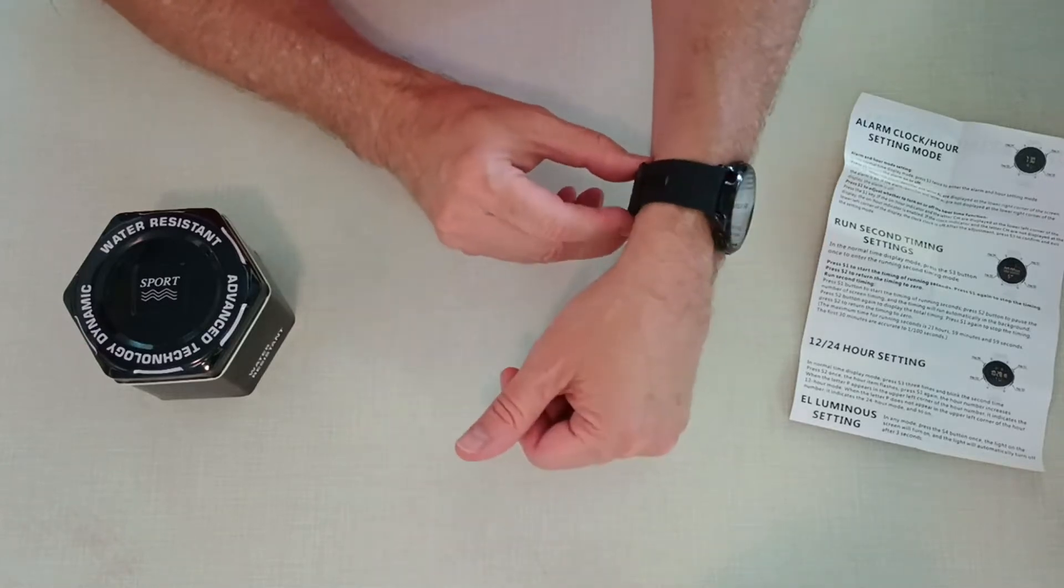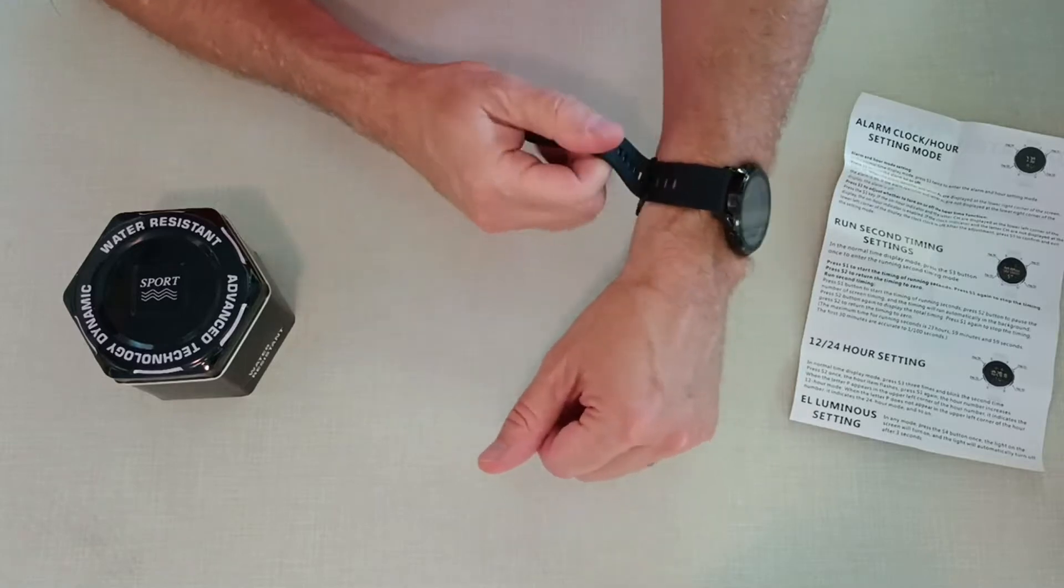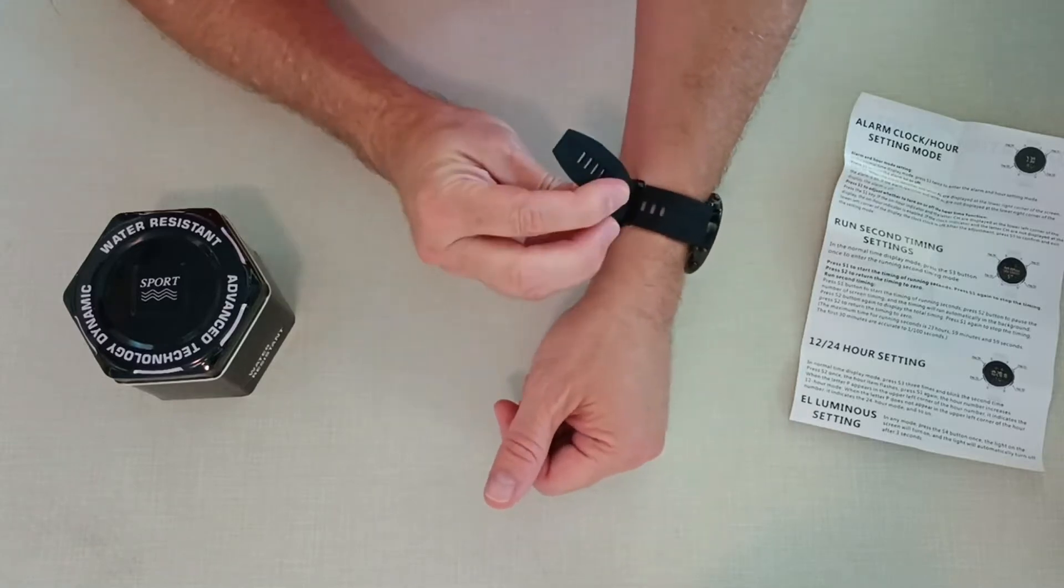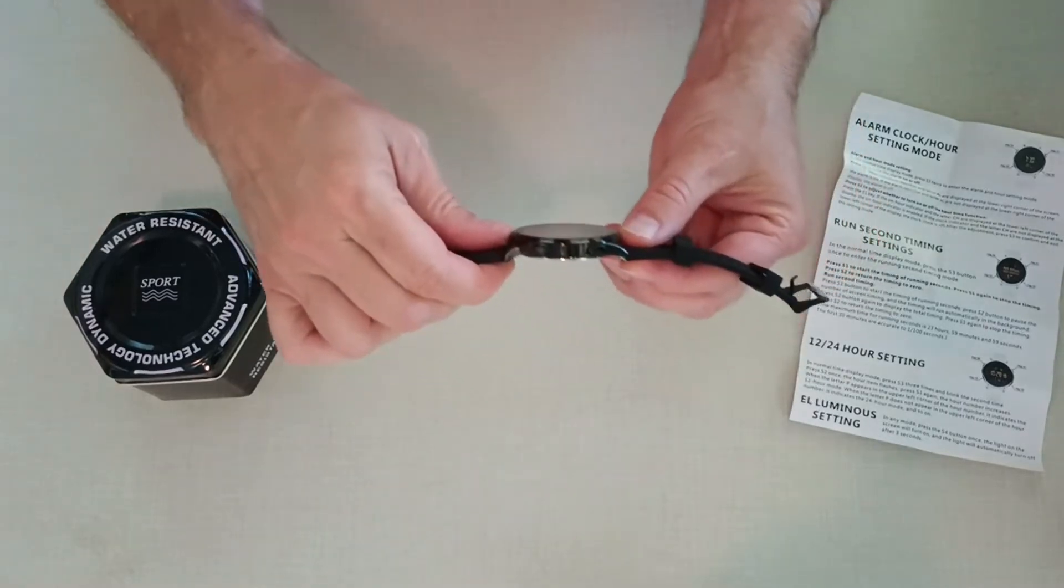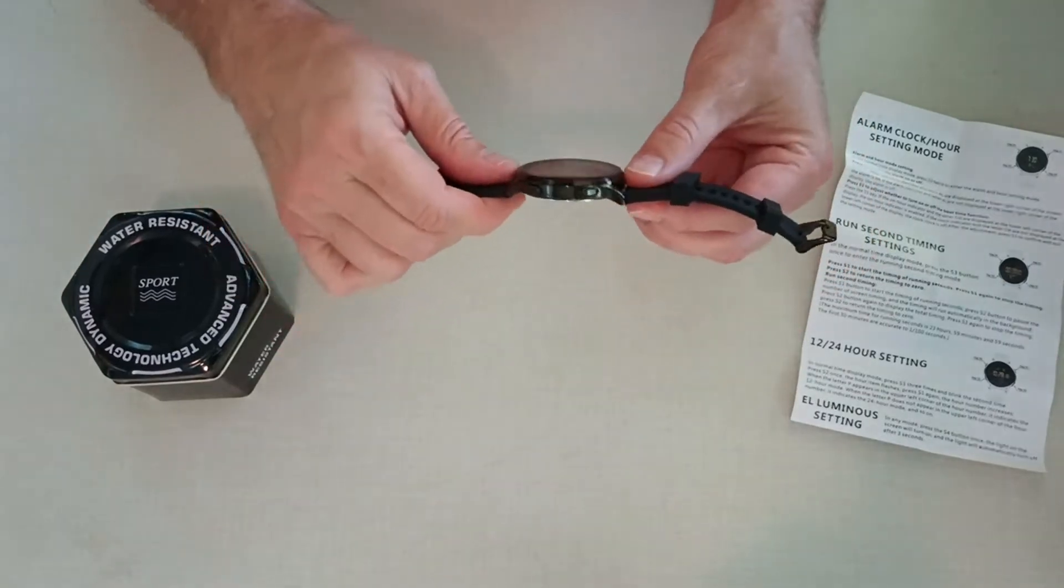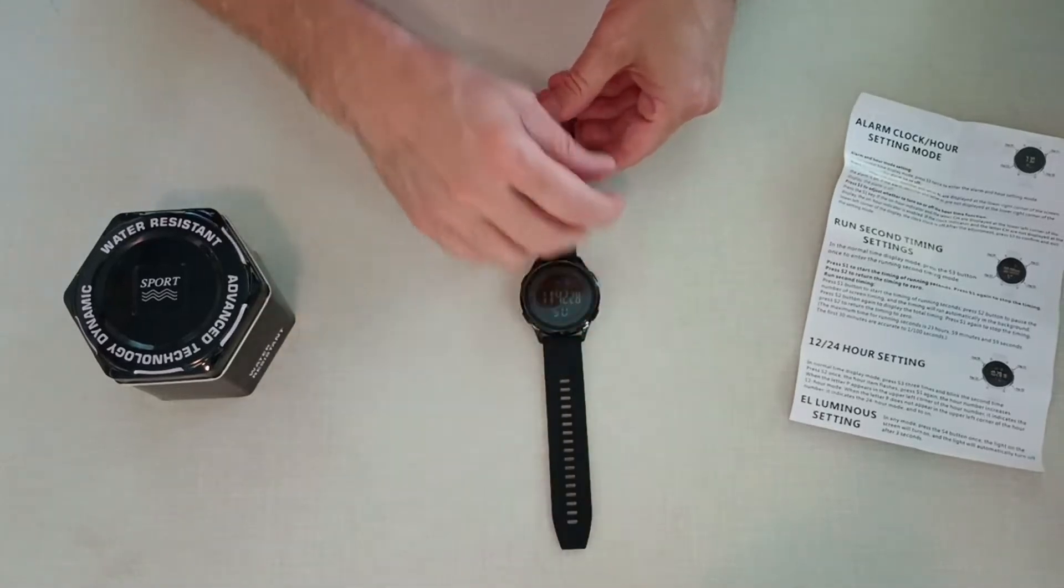It's thin, it's only 10 millimeters thick, 3.9 inches according to my inexpensive digital calipers. So that's pretty thin, about like an Apple watch or something.